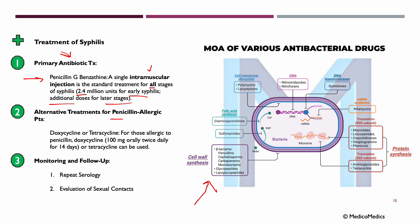We also have alternative treatments if the patient is penicillin-allergic. We have doxycycline or tetracycline. For those allergic to penicillin, we give doxycycline 100 milligrams orally, twice daily for 14 days. Doxycycline belongs to the tetracycline antibiotic group and inhibits bacterial protein synthesis by binding to the 30S ribosomal subunit, making it an effective alternative treatment for syphilis. Essentially, doxycycline blocks the bacteria's protein production and stops it from growing.